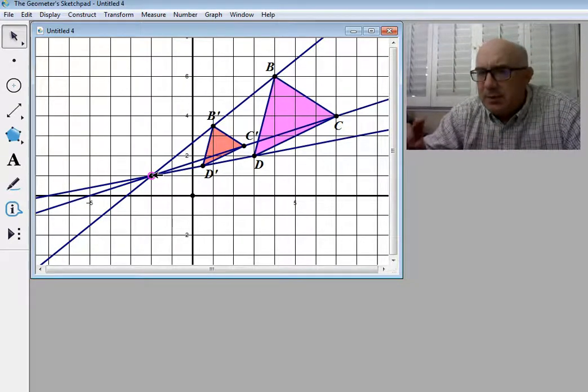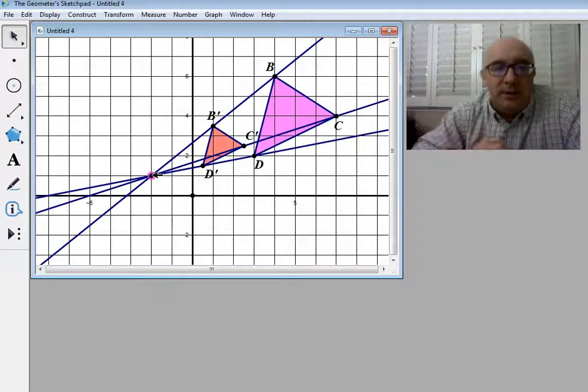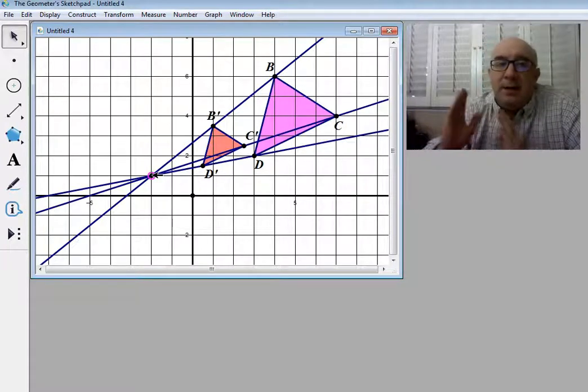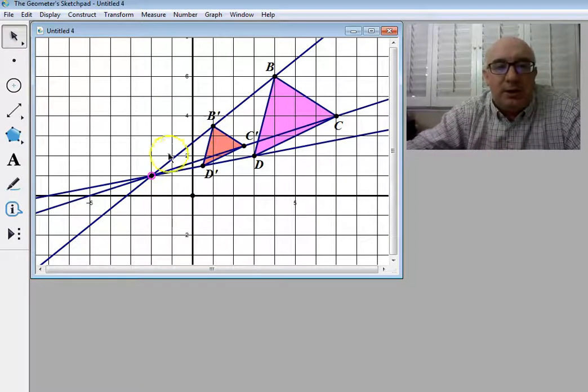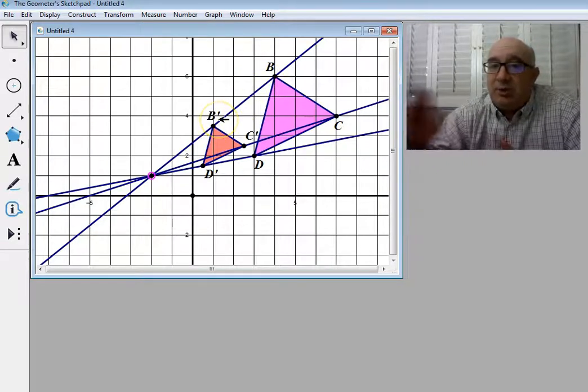Now, the second thing is I knew it was a reduction. And the reason I knew it was a reduction is because B' is closer to the center of dilation than B is. So it came, it got shorter.